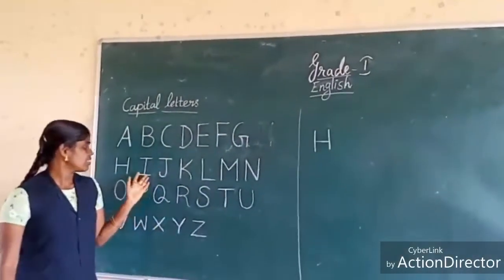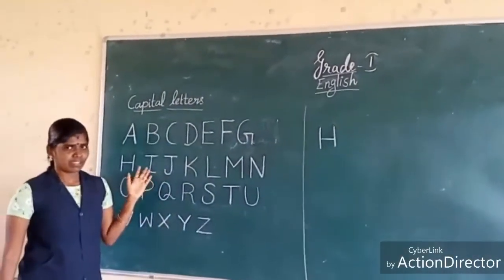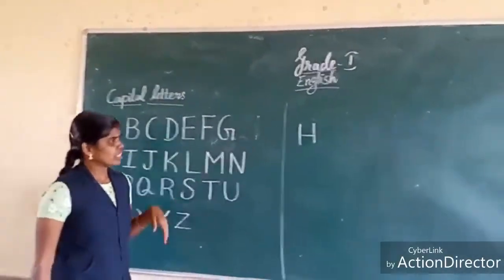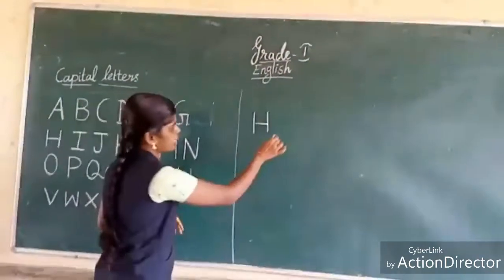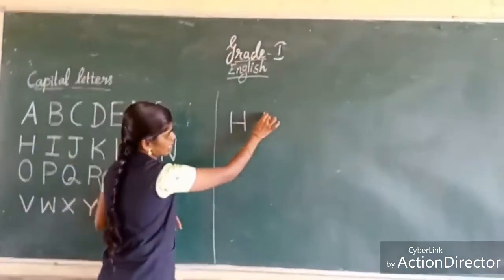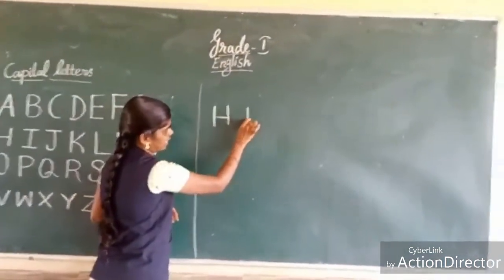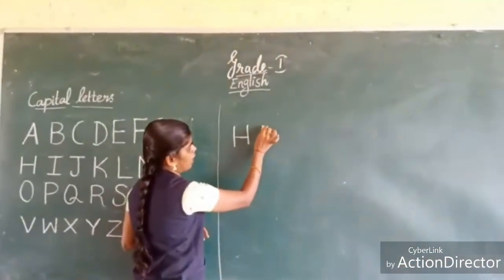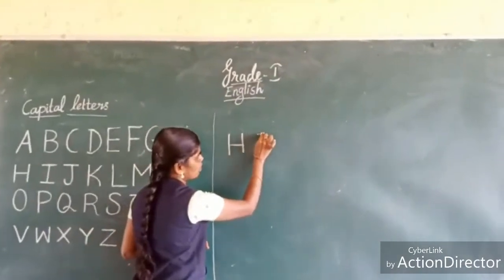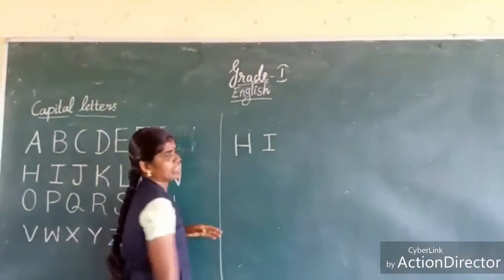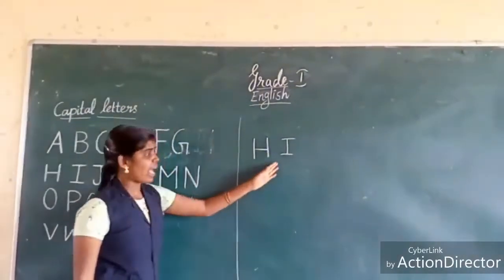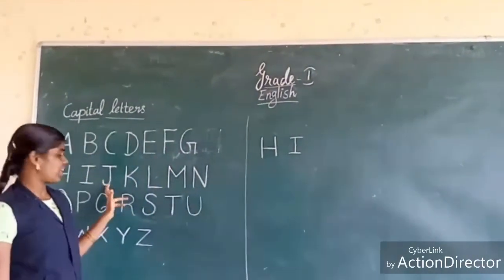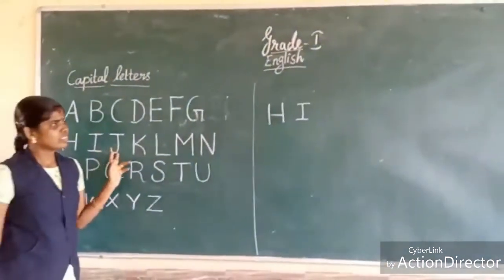Next, this is I. This is very easy to write. One standing line, and a small sleeping line at the bottom, and a small sleeping line at the top. This is I.